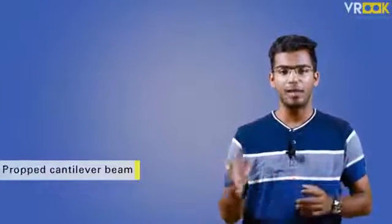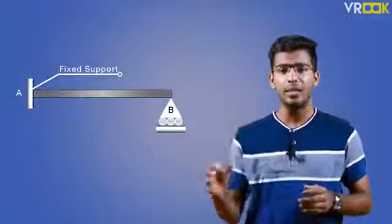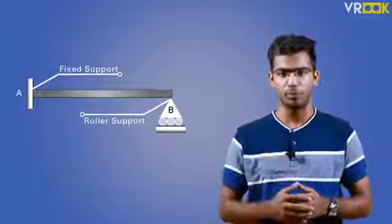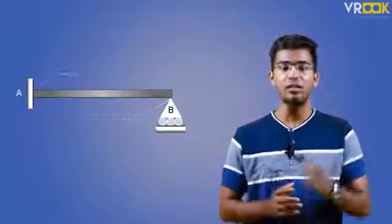And the last type is propped cantilever beam. It is a subtype of cantilever beam. In this beam, one end of the beam is fixed and the other end is supported by a hinge or a roller support. These are the major types of beams.